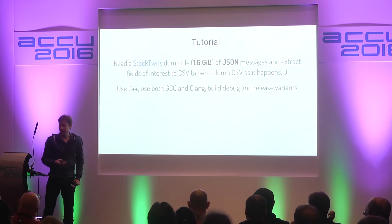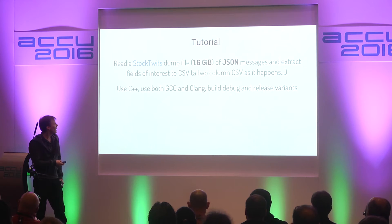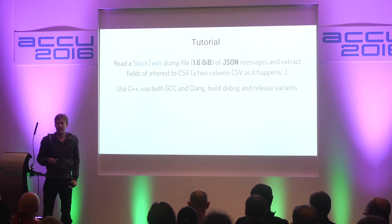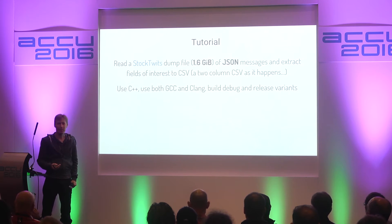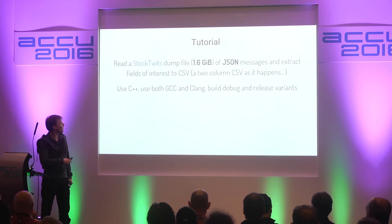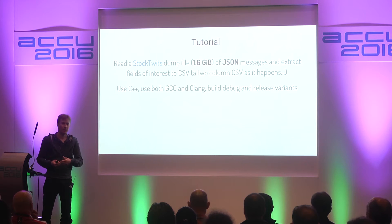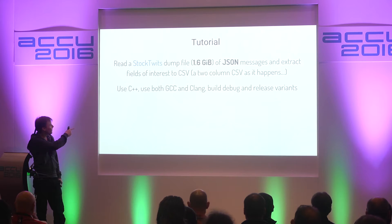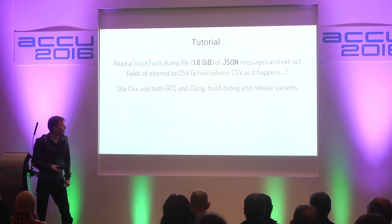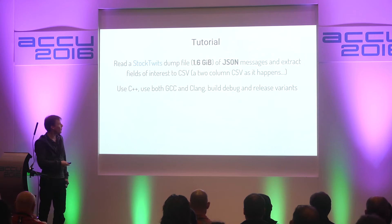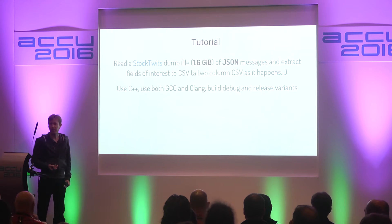So to give us a goal, we'll actually try and do something. Anybody familiar with StockTwits, or Twitter - they produce JSON messages. Let's say we want to do some sentiment analysis. We'll get a dump file of a month's worth of data from StockTwits, go through that, and produce a CSV that we can pump into statistical analysis software. We won't use Python to do this - we'll use C++, which actually turned out to be easier to write than Python. We'll use a couple of toolchains and do debug and release variants. Very simple.